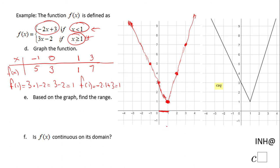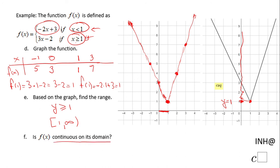Based on the graph we find the range. The minimum value is 1 at the point (1, 1), and the function increases from there, so the range is any number greater than or equal to 1, or [1, ∞) in interval notation. Finally, since there are no gaps or holes, the function is continuous on its domain of all real numbers.